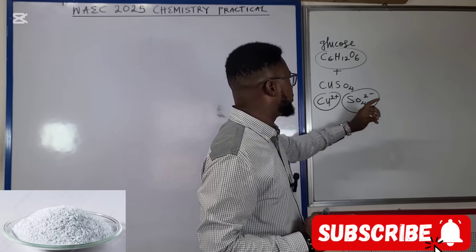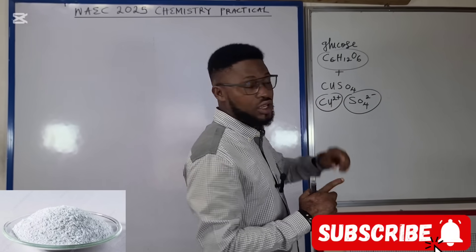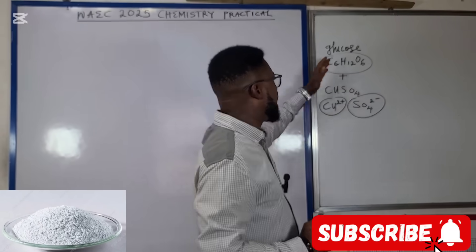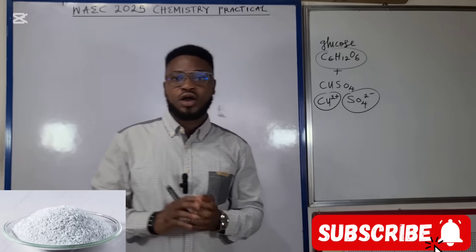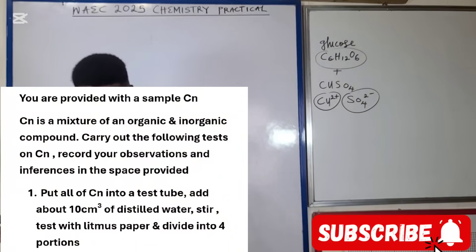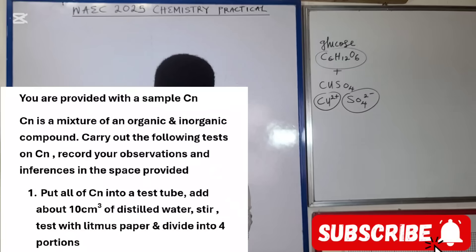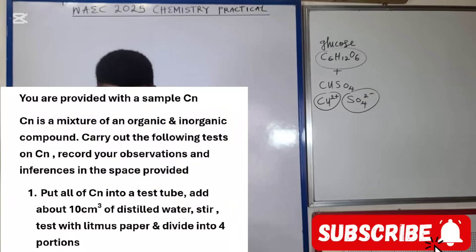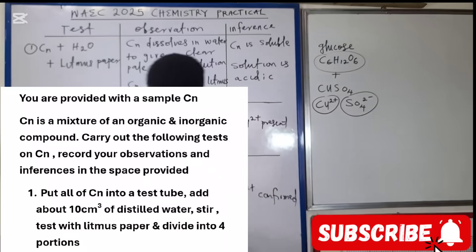What are the probable questions? As you can see on your screen, you are provided with a sample CN. CN is a mixture of an inorganic and organic compound. Carry out the following tests on CN, record the observation and inferences in the space provided.